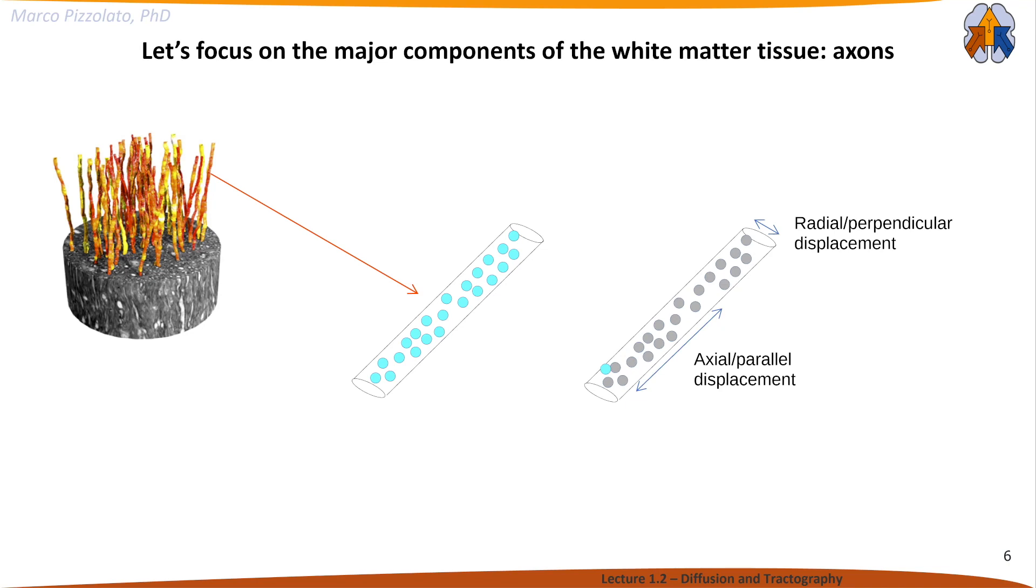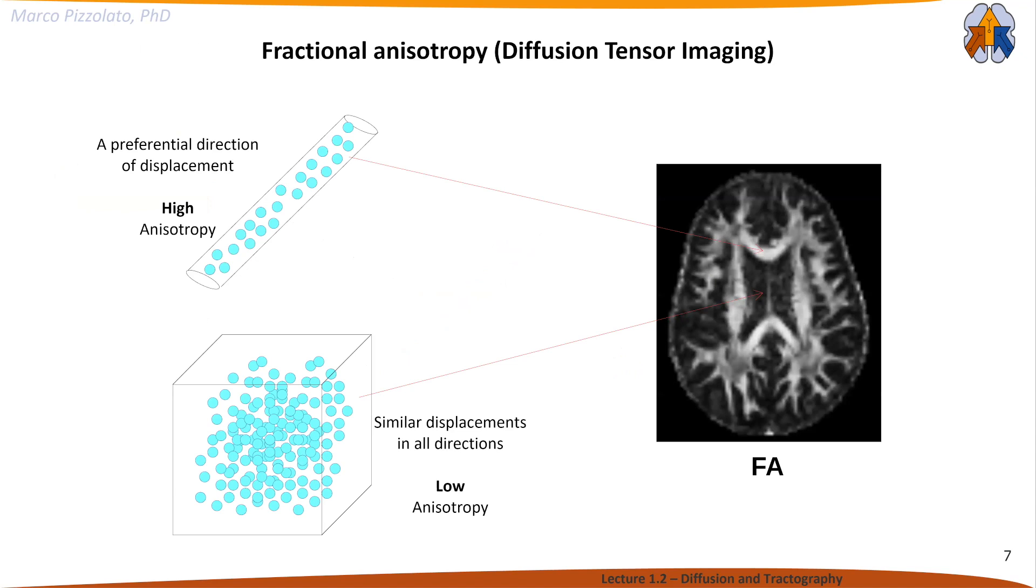Once we can measure this displacement, we can create maps of the brain. One of them is the well-known fractional anisotropy, where a bright pixel indicates a voxel where diffusion occurs in a longer preferential direction—we call that high anisotropy. In dark areas we have low anisotropy, meaning diffusion is not confined within anisotropic structures like axons but occurs equally along several directions.